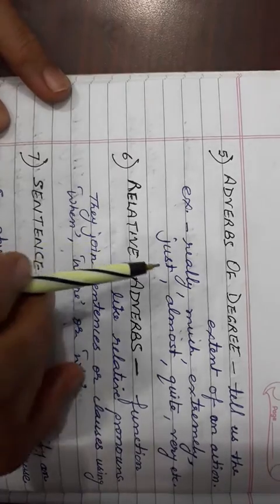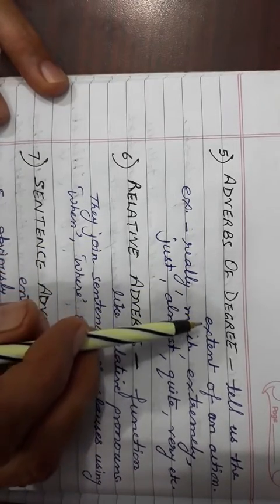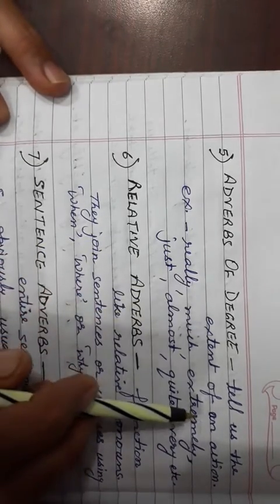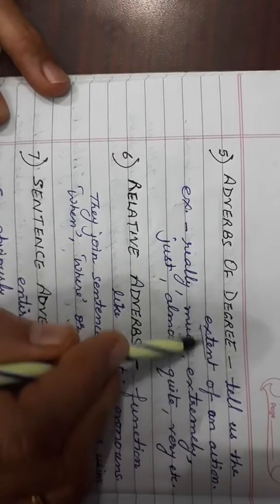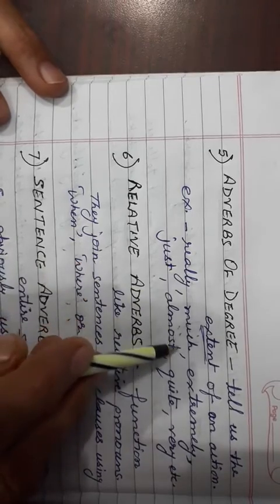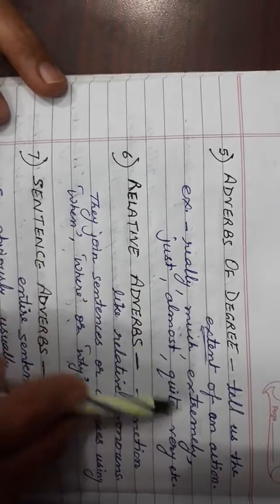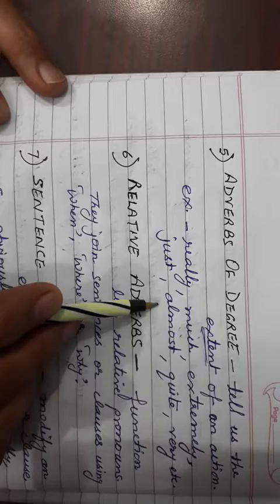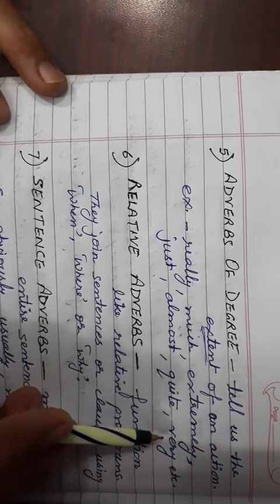Fifth is adverbs of degree. Tells us the extent of an action. Really, much, extremely, just, almost, quite, very, etc. So these words are adverbs of degree.